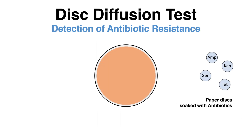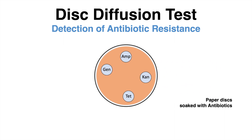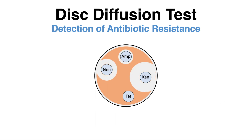Small paper discs soaked in different kinds of antibiotics are placed directly on the lawn. The disc will evenly release the respective antibiotic during incubation. Around some of these antibiotic patches, a circular zone appears. The drug inhibited growth or eliminated bacteria around the discs. The diameter of these zones can be compared to determine the level of susceptibility.